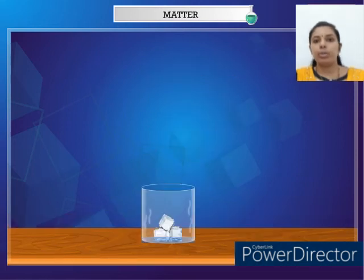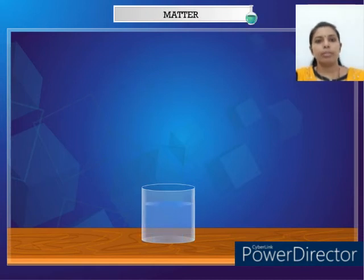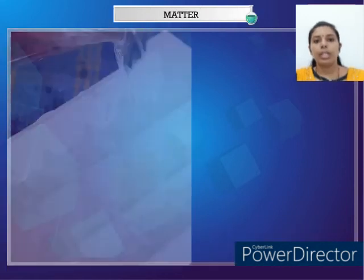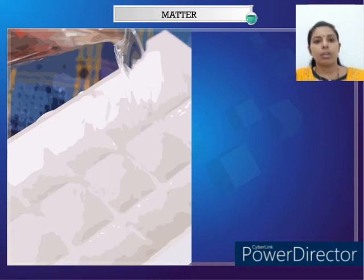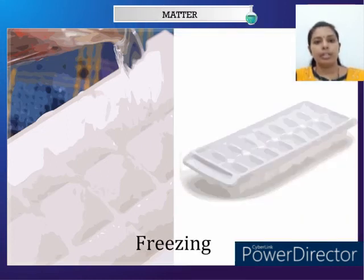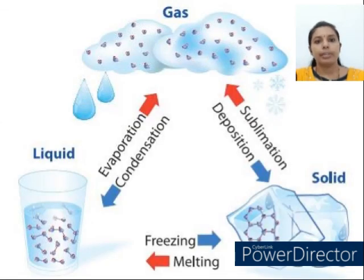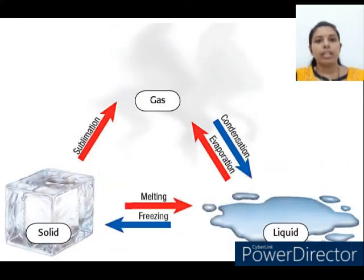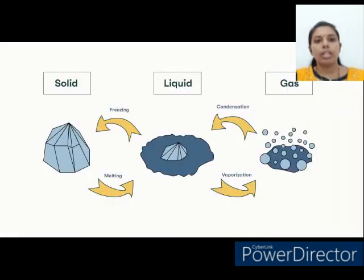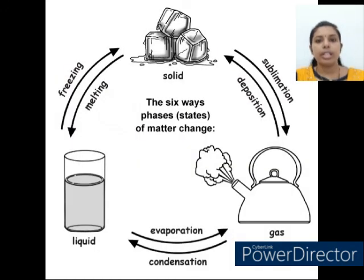On cooling, gas changes into liquid state — this process is called condensation. On further cooling, the liquid finally turns into a solid — this process is called freezing. Every solid has a particular melting point which is also the freezing point of the corresponding liquid. A particular amount of heat is required to change a solid into a liquid, and the corresponding liquid loses the same amount of heat when it changes into a solid.